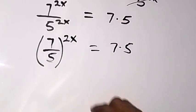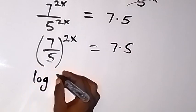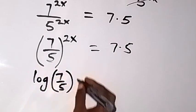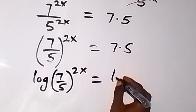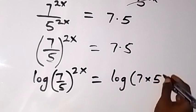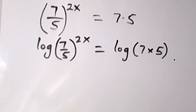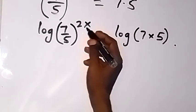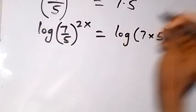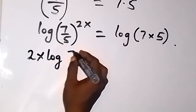From there we can take the natural log on both sides. This gives us: log of (7 over 5) raised to power 2x equals log of 7 times 5. Applying the law of logarithms, the power can come to the front, so we have 2x times log(7 over 5).